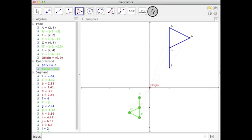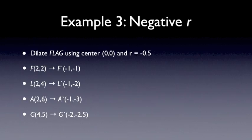All right. So now we have our dilated image. F-L-A-G becomes F-prime L-prime A-prime G-prime. You'll notice the orientation has changed. Instead of standing up and pointing off to the right, it's fallen over and pointing off to the left. And all of the segment lengths are half as big. And so we see whenever we have a negative scale factor, not only does the number apply, but the fact that it's a negative scale factor changes the orientation.